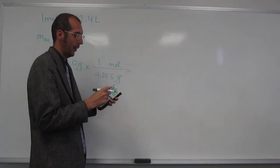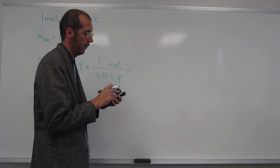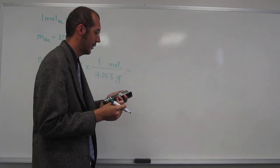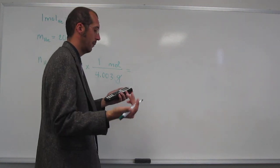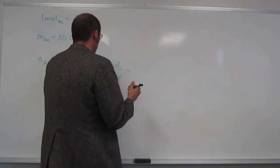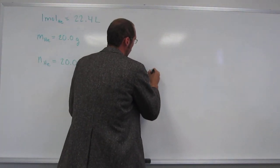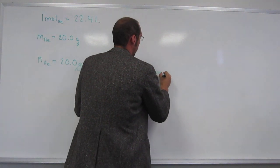This says in our calculator, 4.99625281, right? So to 3 sig figs, that's going to be 5.00, okay? So 5.00 moles.